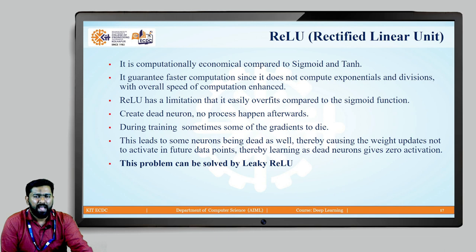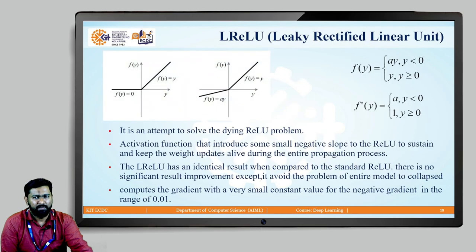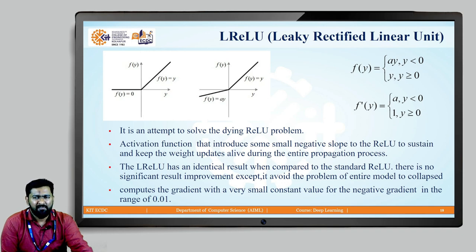To solve the dead neuron problem, we have another version of ReLU called leaky ReLU. Instead of outputting 0 for negative numbers, there is a very small slope. The function is f(y) = a*y when y < 0, where a is a very small number like 0.01, so there is still a value rather than 0. Leaky ReLU has the same performance as ReLU but solves the dead neuron problem, because it does not make negative values exactly 0.